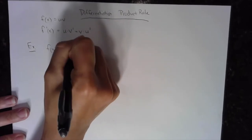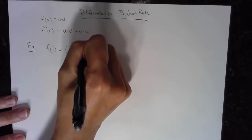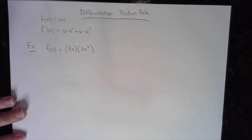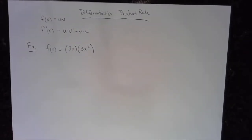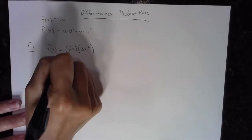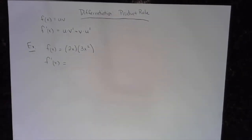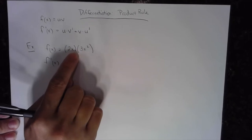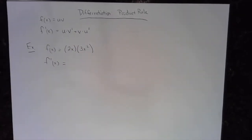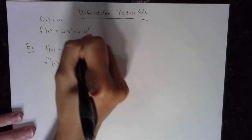For our first example, let a function be the product of 2x times 3x squared. To do the product rule you should know your basic power rule — if you don't, go check that video out. We want f prime of x using the product rule. Now this type of function doesn't necessarily need the product rule, but we're going to use it for practice, because later you'll see functions where you can't avoid it.